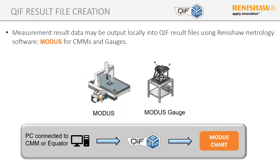The workflow for how we're using QIF: we capture measurement data on CMMs using MODUS and on our equator gauges using MODUS. That data goes onto a PC or equator controller into the measurement software, which produces the QIF file. Once produced, it's sent to MODUS Chart for reporting — completely separately. MODUS Chart can be on the PC by the CMM, on the equator controller, or the QIF can be sent elsewhere and reporting done at a completely different location.